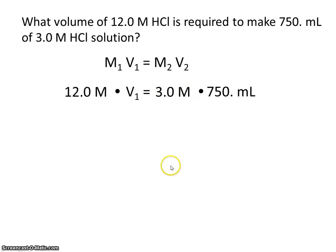So just simply solve for V1. 3 sig figs, 2 sig figs, 3 sig figs, so this number has 2 sig figs. So we need 190 milliliters of this 12 molar solution.